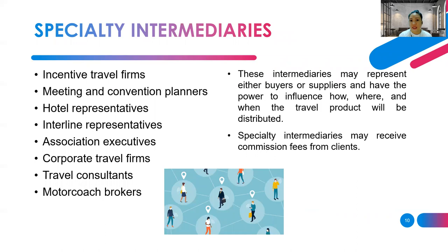Next are specialty intermediaries. Examples include incentive travel firms, meeting and convention planners, hotel representatives, interline representatives, association executives, corporate travel firms, travel consultants, and motor coach brokers. They are called specialty intermediaries because they focus on a specific product. For example, hotel representatives primarily sell hotel room services, calling out to potential markets and inviting consumers to stay at their hotel.